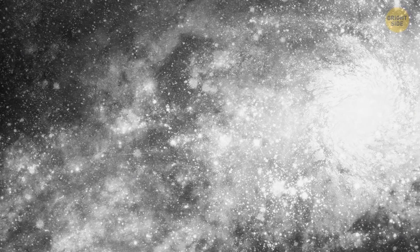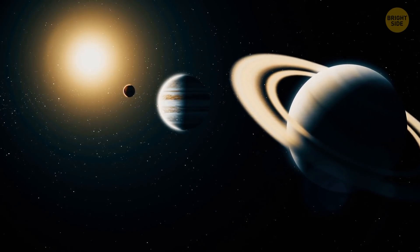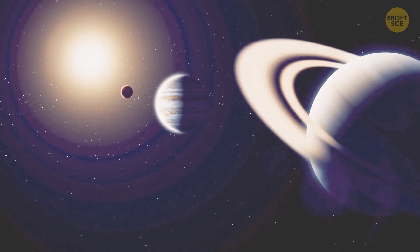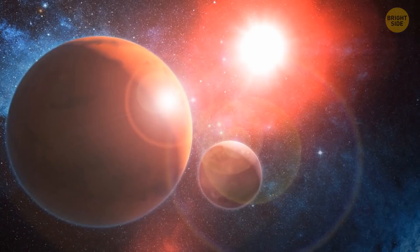The coronagraph blocks out the bright pinpoint light of stars, which we already know have planets orbiting around them. Without the coronagraph, the starlight would make things too bright to see these planets, because planets are hundreds of thousands of times dimmer than the star. But with the coronagraph blocking the starlight, the exoplanets come into view.